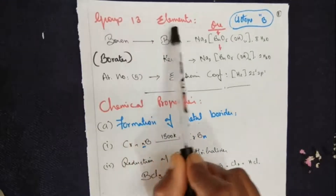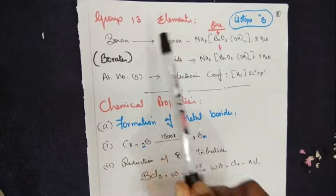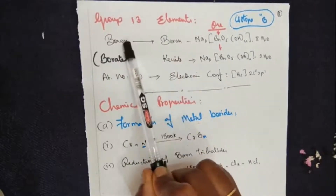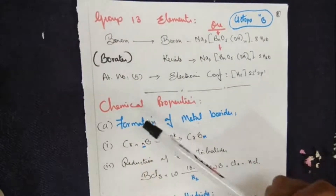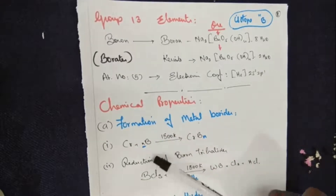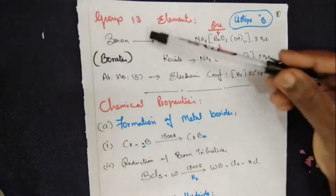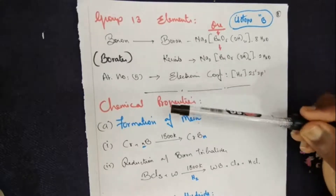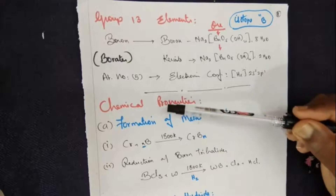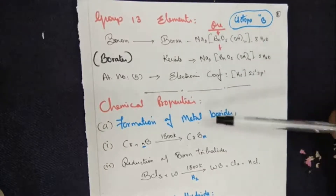We will start with group number 13. Group 13 is made up of boron, aluminium, gallium, indium, and thallium, leaving out the radioactive metal. Under this group, two types of elements you will learn in detail: one is boron and the other one is aluminium.